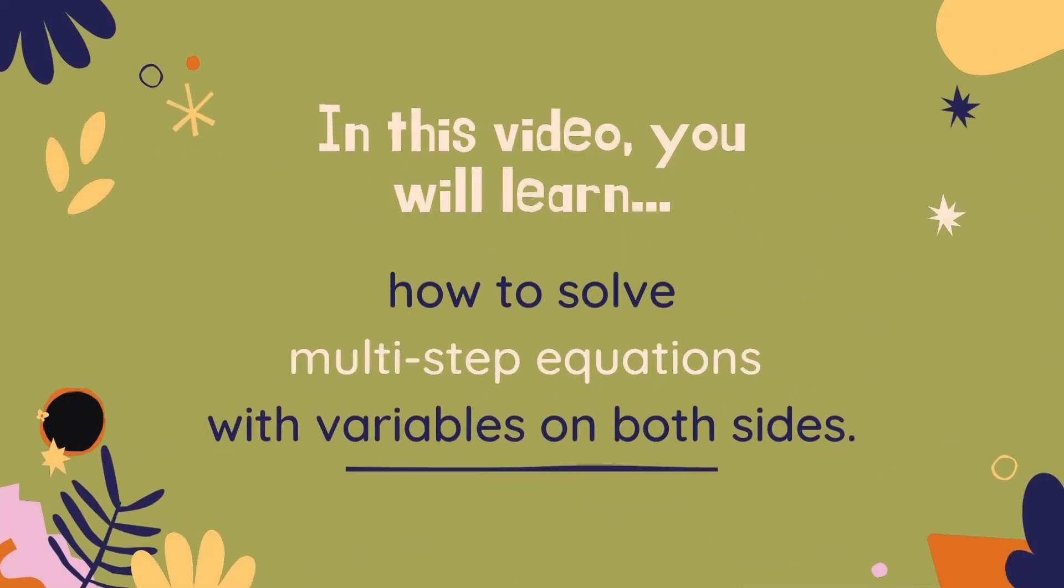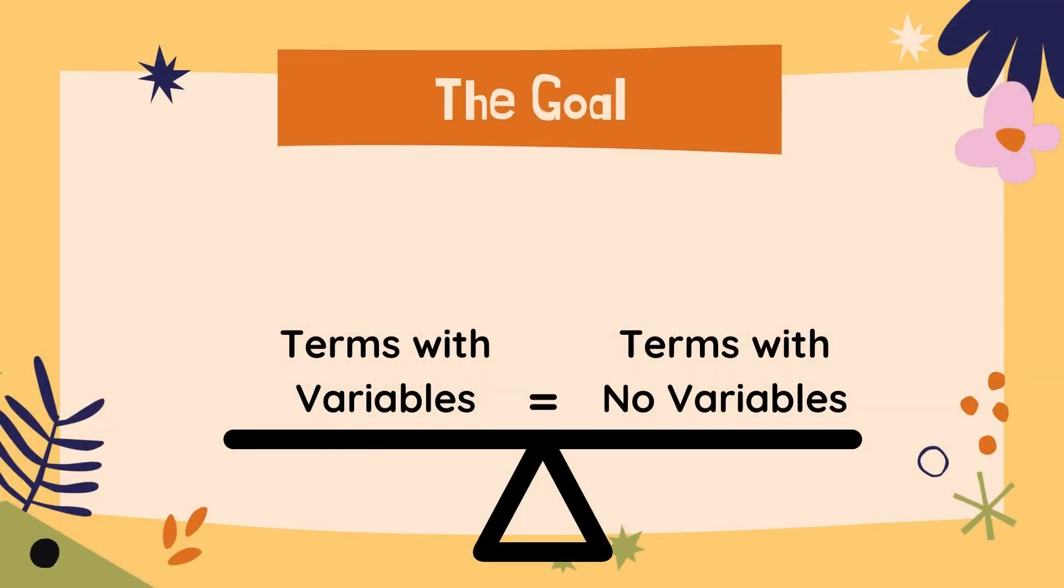In this video, you will learn how to solve multi-step equations with variables on both sides. Remember that when you solve an equation, you're trying to get the variable on one side of the equal sign all by itself. That's called isolating the variable, and you want everything else on the other side.